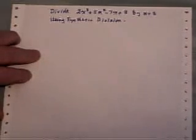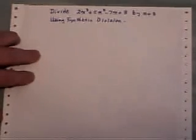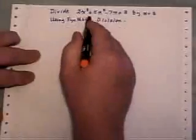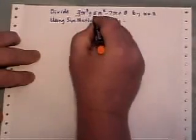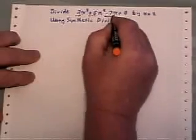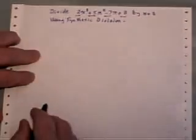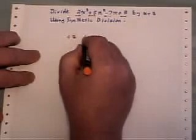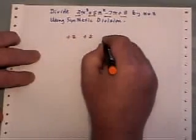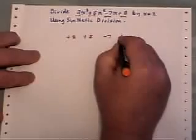Now when Joe Synthetic invented his synthetic division he said, well we're dealing with the variable x here so we don't really need to write it down. Let's just go through and write down the numbers plus 2, plus 5, minus 7, and plus 8.